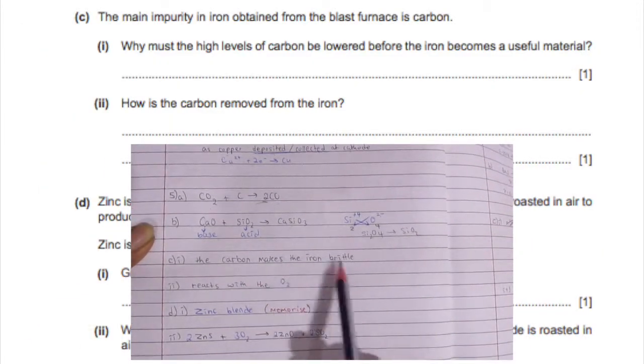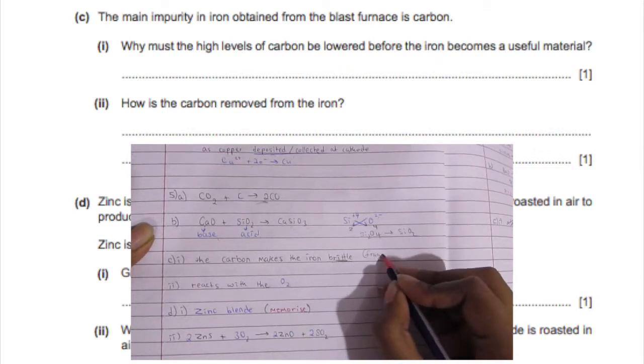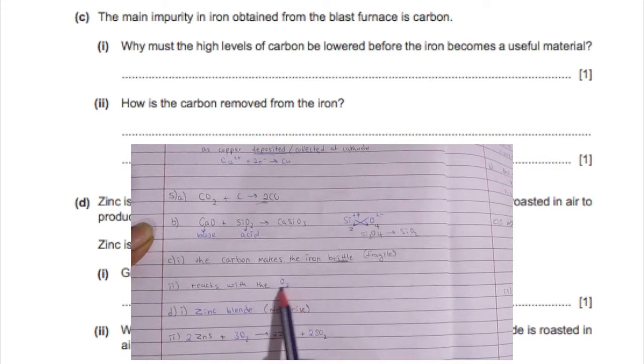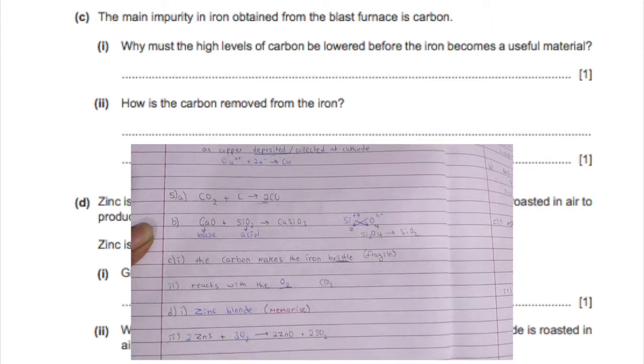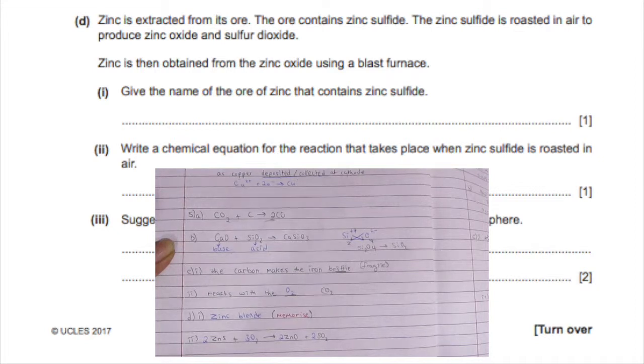And Si 4+ oxygen 2- these are the valence electrons. You cross them, you get Si2O4, you can simplify it to SiO2. Now the carbon is removed from the iron because it makes the iron brittle, or you can say fragile, because it's hard but it can break easily. Now we can react it with oxygen in order to get carbon dioxide and that's how you can get rid of that carbon.